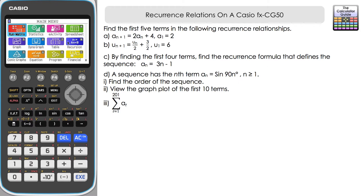Find the first five terms in the following recurrence relationships. For A we have A_(n+1) = 2A_n + 4 where A₁ = 2, so the first term of the sequence is 2. For B we have U_(n+1) = U_n/2 + 3/2, and we have U₁ = 6.